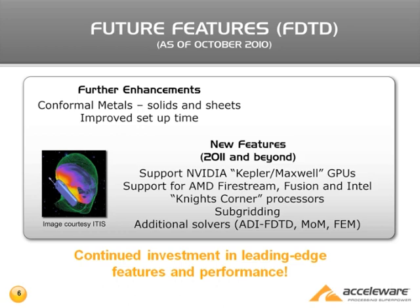In terms of FDTD features, we're also actively looking into sub-gridding, which could provide some significant performance benefits — both in size and performance — in our libraries.